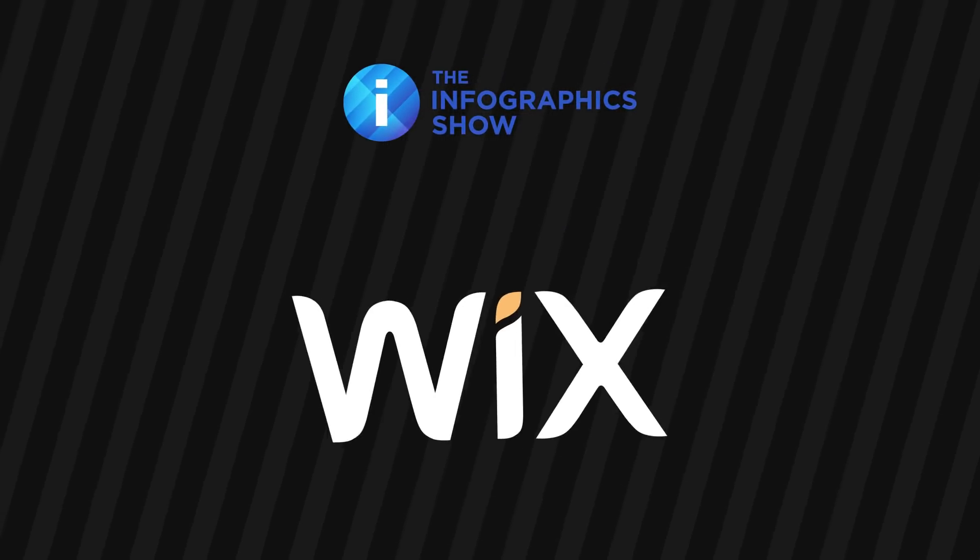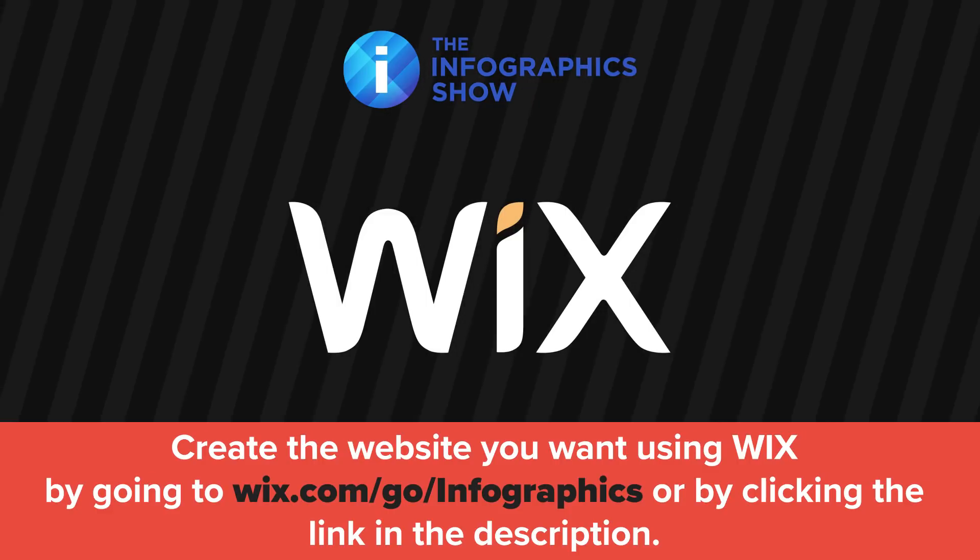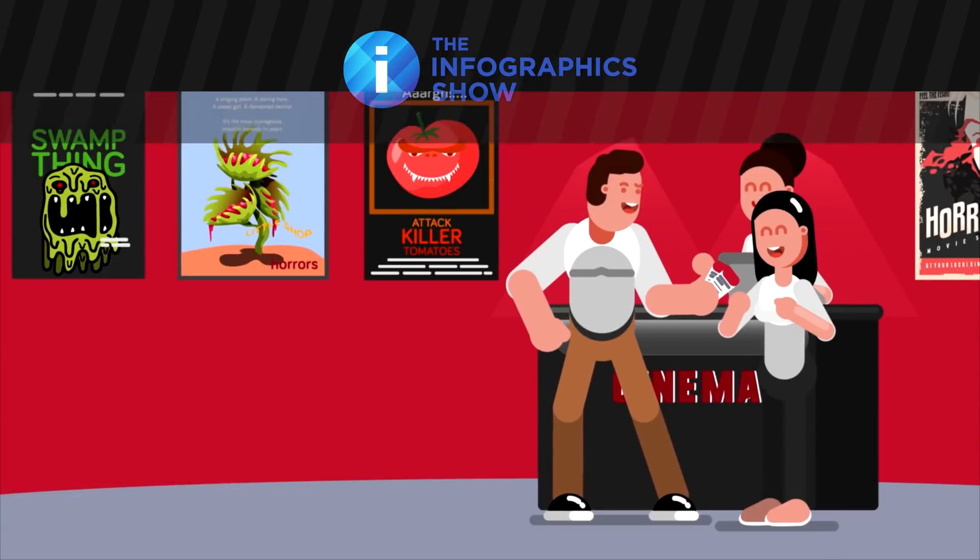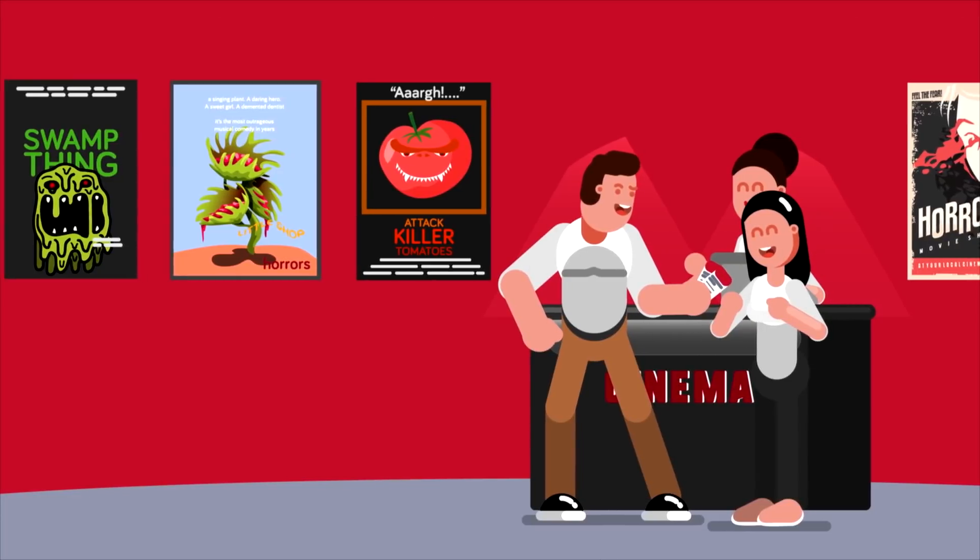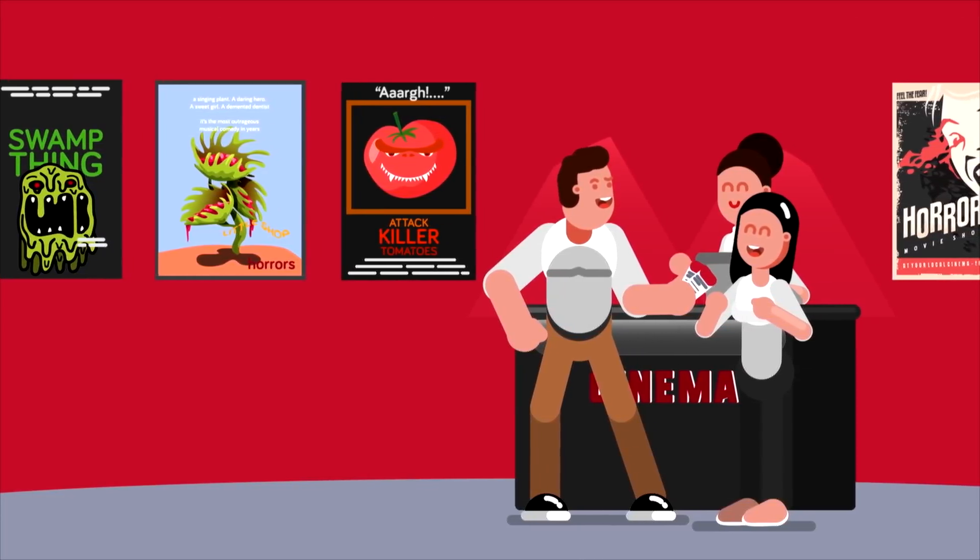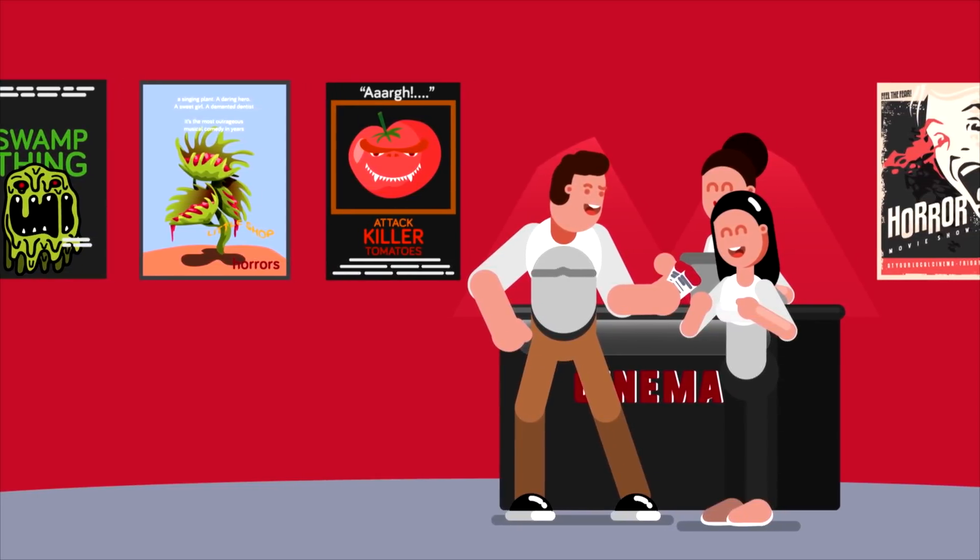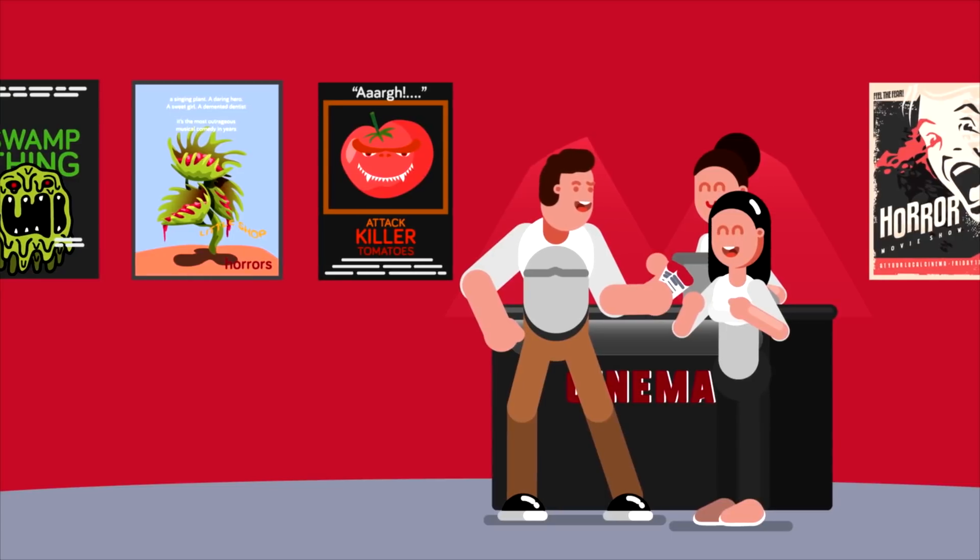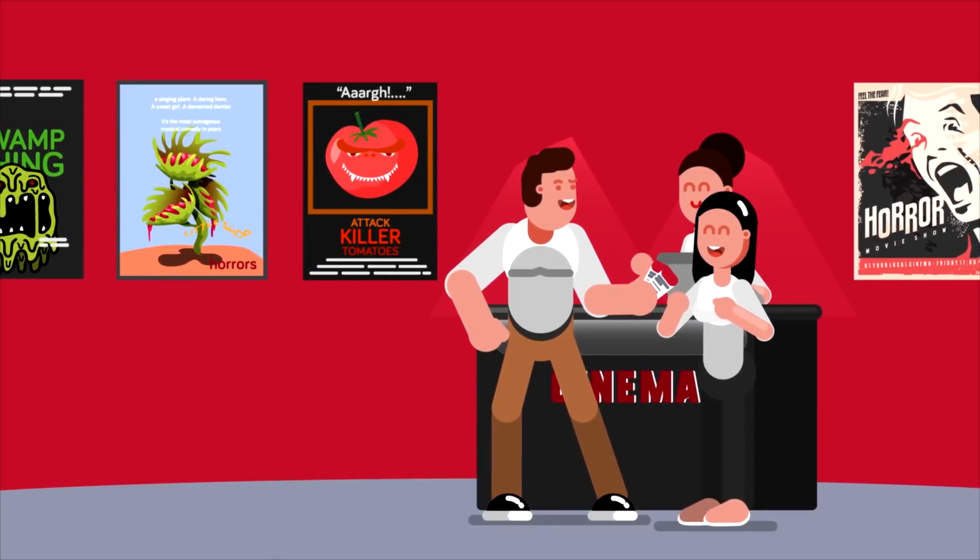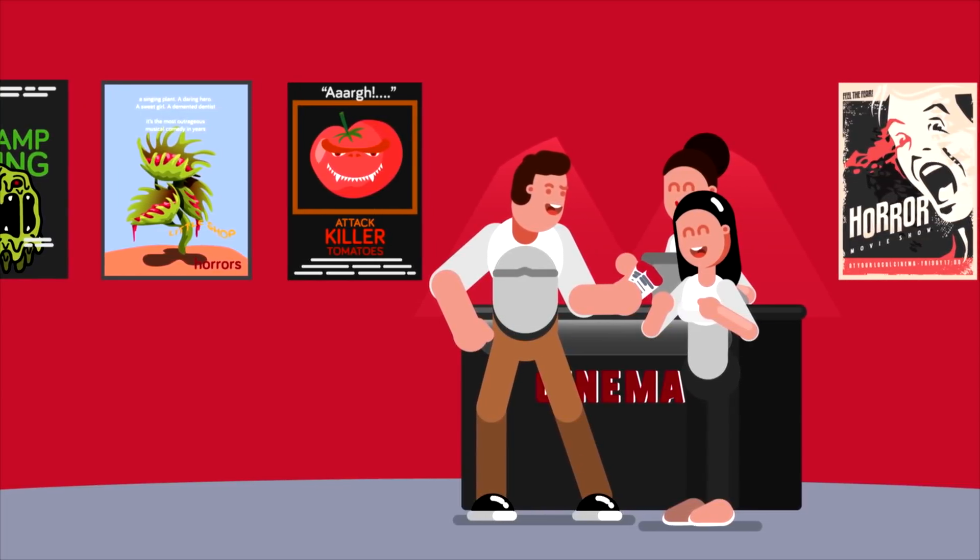This video was made possible by Wix. If you are ready to create a website, head over to wix.com/go/infographics to try out one of their premium plans right now. It seems these days, killer plant movies aren't really in vogue, but in the past, those sometimes ridiculous films were all the rage. Think of Invasion of the Body Snatchers or Swamp Things, and who could forget Attack of the Killer Tomatoes and the classic Little Shop of Horrors. While plants certainly don't invade neighborhoods and gorge themselves on American families, some plants are indeed deadly.